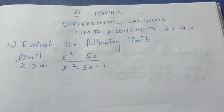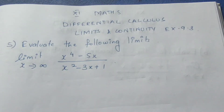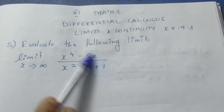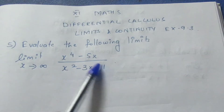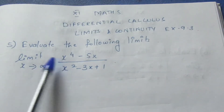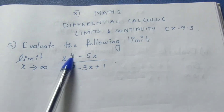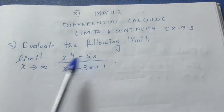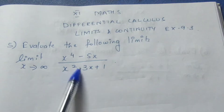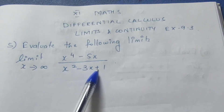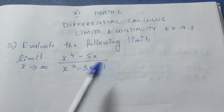Let's evaluate the following limit. The limit extends to infinity — x to the power 4 minus 5x, divided by x squared minus 3x plus 1.